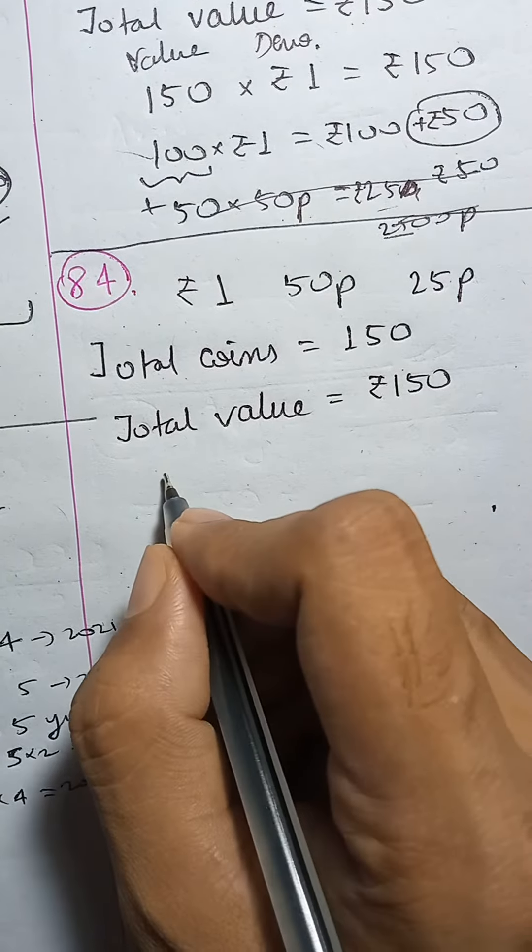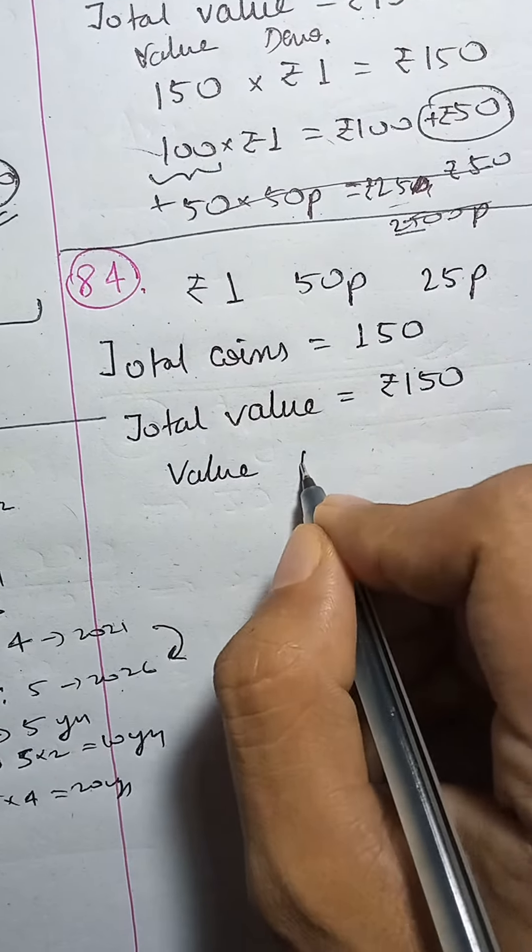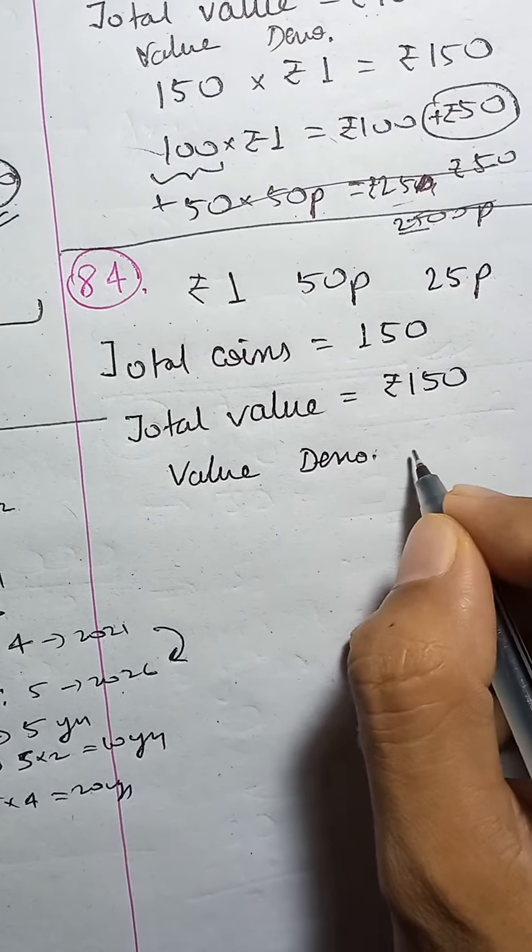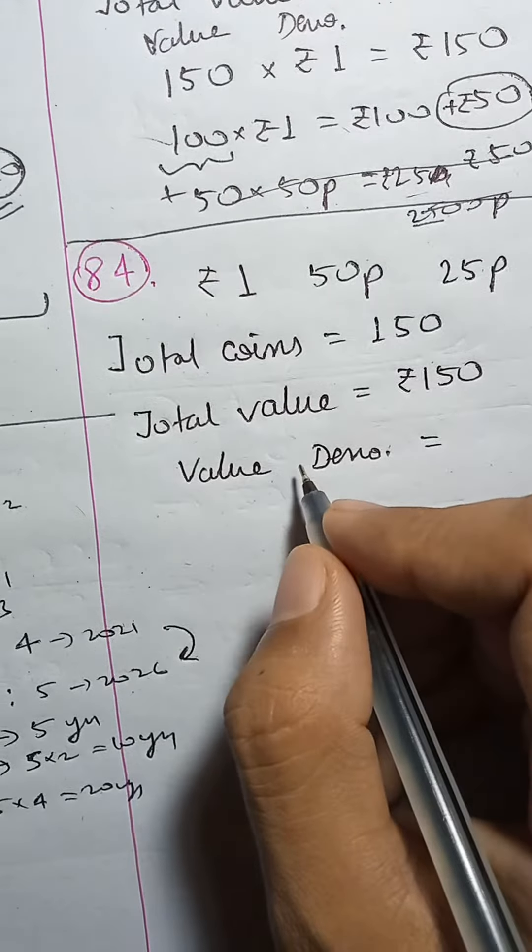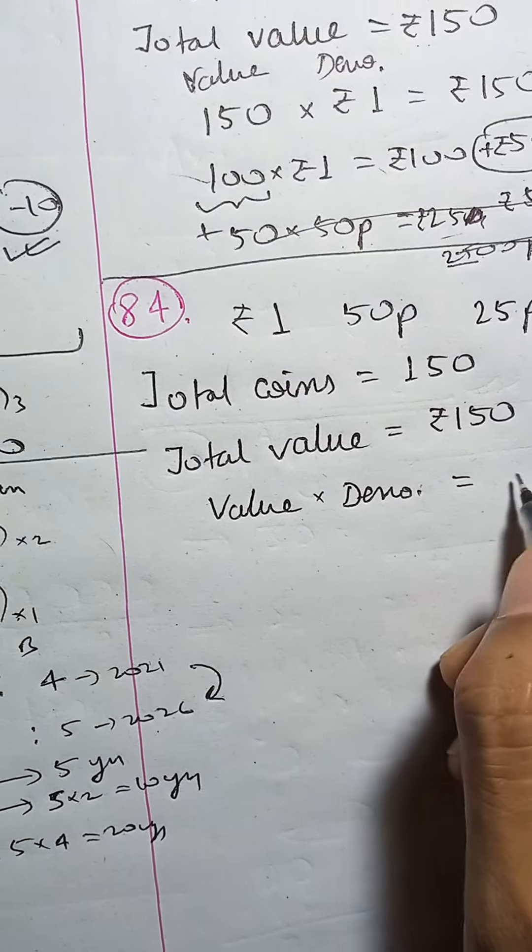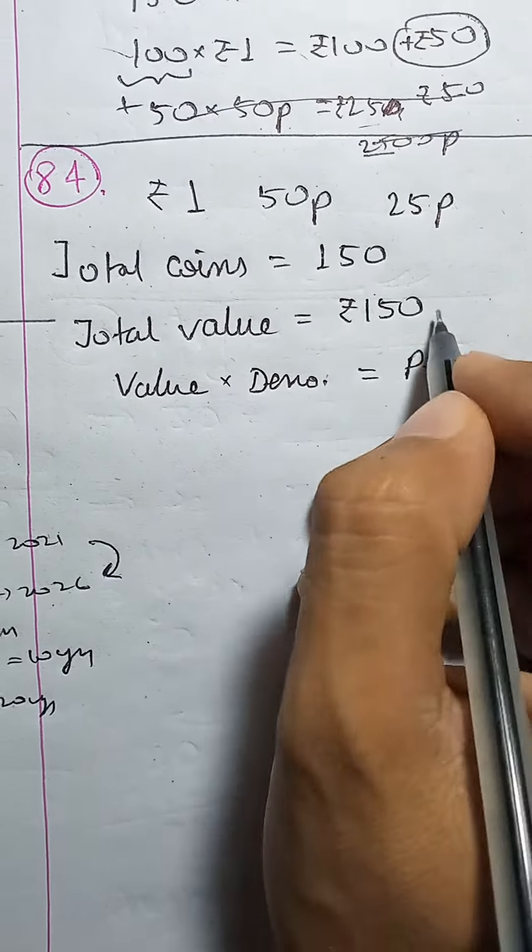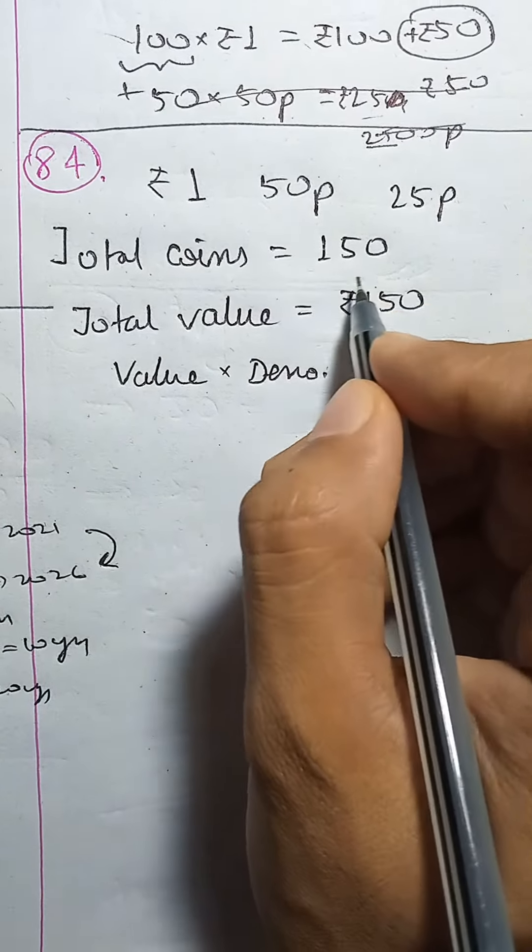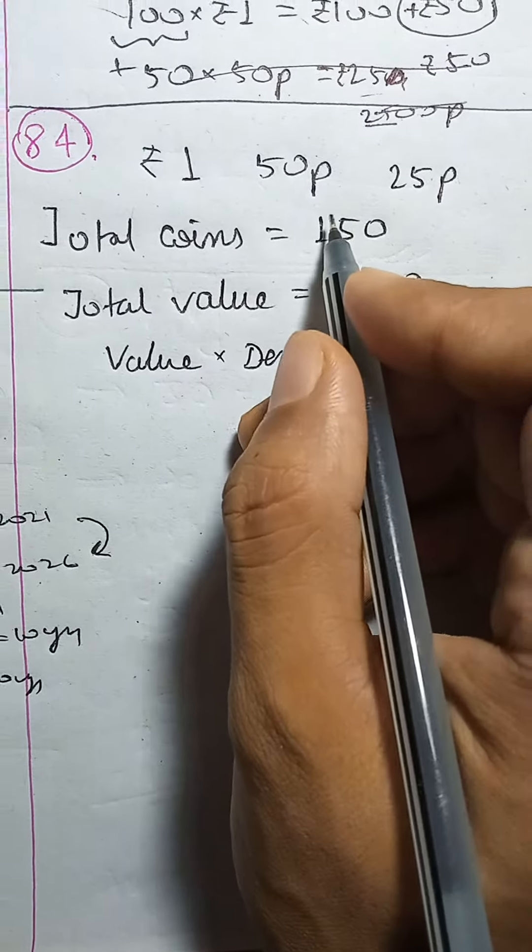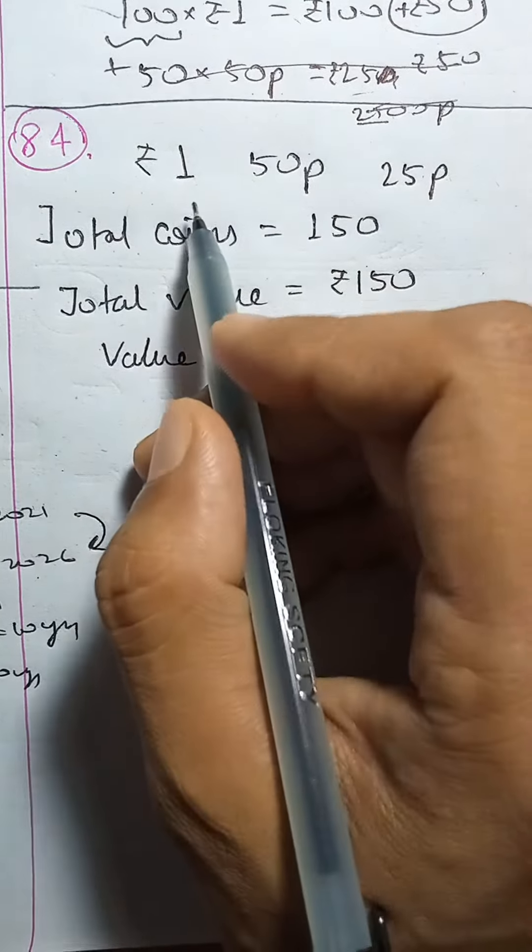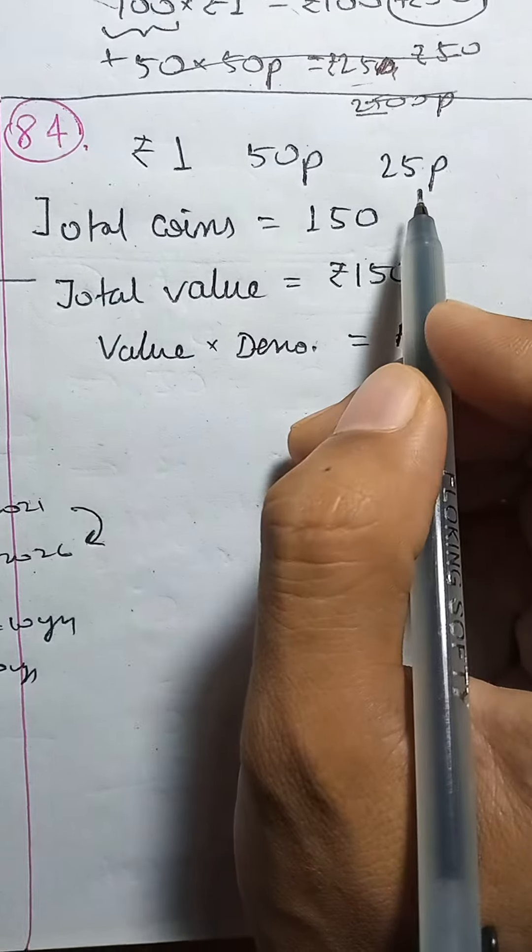Total value is rupees 1 and 50 paise. Now, here we are going to write value, here we are going to write denomination and here we are going to write price. Rupees 1 and 50 paise coin will appear, $1 and 50 paise, and here we are going to write price.